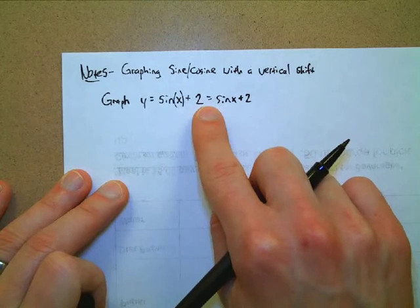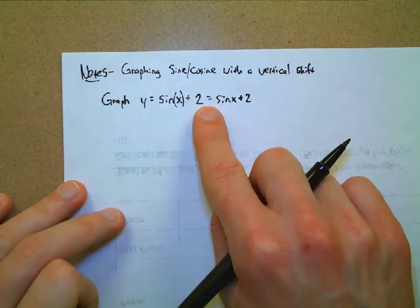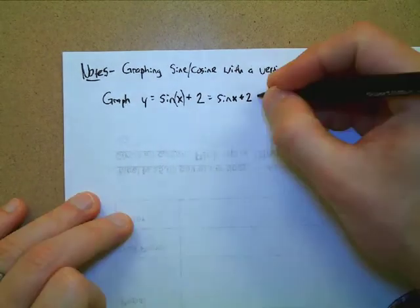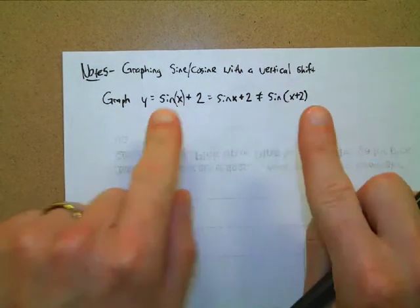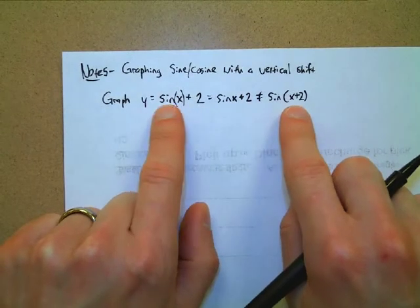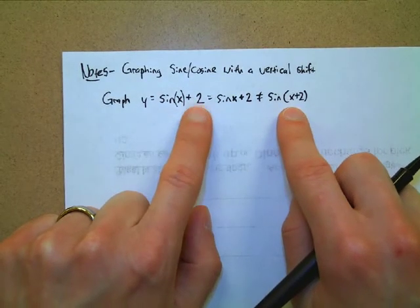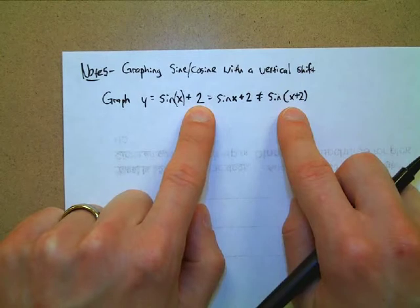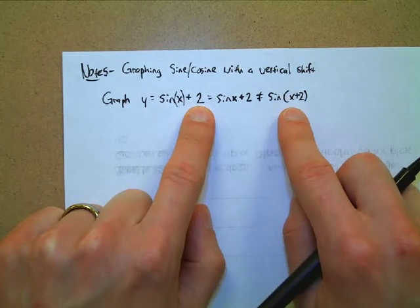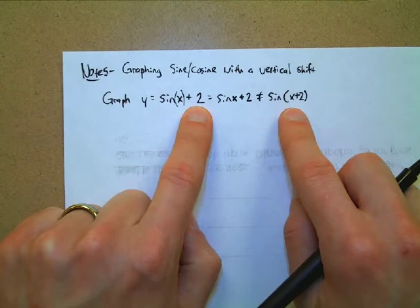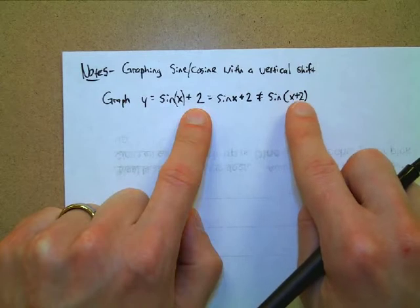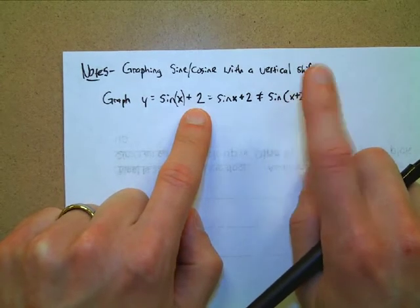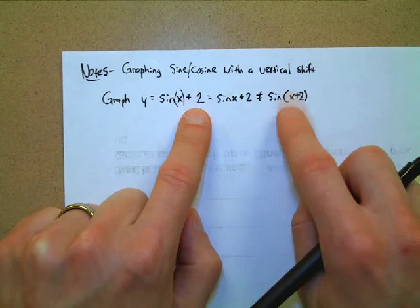This is very important because these two things are saying very different transformations. When the plus two is on the outside, what kind of transformation does that result in? For any function, if you have a plus two on the outside, it's up and down — in this case, up two. When the plus two is inside the sine function with the x, it indicates a left or right shift — in this case, left two.